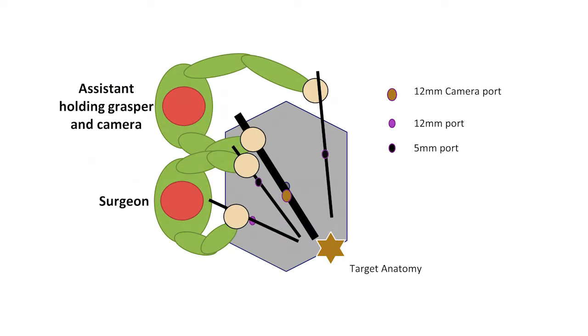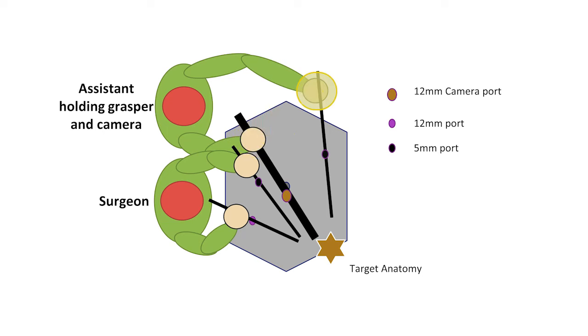Placement of the assistant 5mm port in the left upper quadrant also allows an experienced cameraman to manipulate the camera with his right hand and the assistant grasper with his left hand while standing to the surgeon's left.